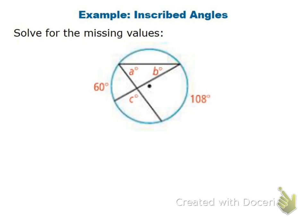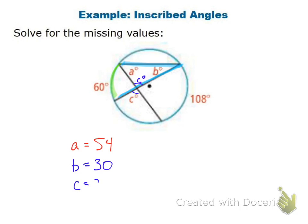For the last problem on this set, finding which angles correspond with which arcs: angle A is eating the 108-degree arc, so angle A equals 54. Angle B is made up of two lines eating its arc, so angle B equals 30. Angle C is a vertical angle, and A, B, and C all have to equal 180. So C equals 180 minus 54 minus 30, which is 96.